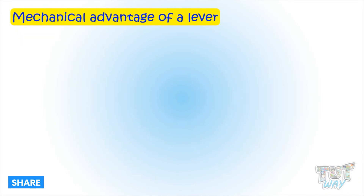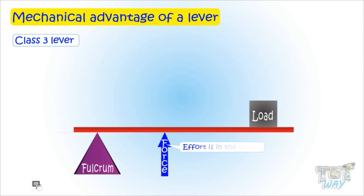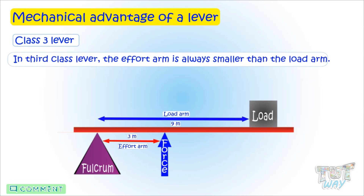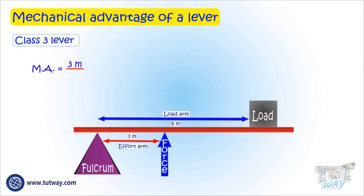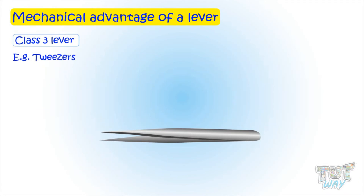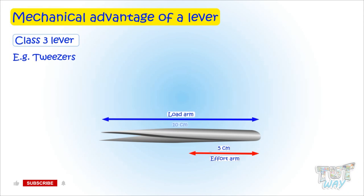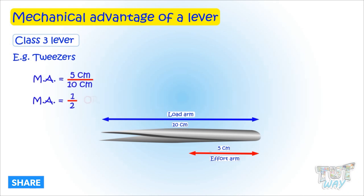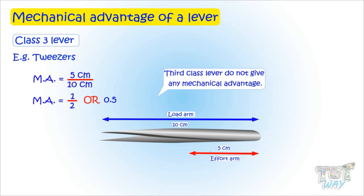Here is a class 3 lever, where the effort is in the center. The effort arm is always much smaller than the load arm, and the mechanical advantage is always less than 1. Less than 1 means it does not multiply the effort applied, but must be giving some other advantage — we will learn about that in higher grades. For example, a tweezer has an effort arm of 5 centimeters and a load arm of 10 centimeters, so the mechanical advantage is 5 divided by 10, which equals 0.5 — less than 1. So third-class levers do not give mechanical advantage.